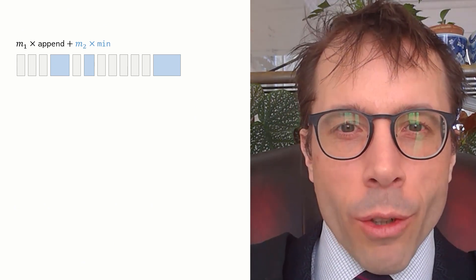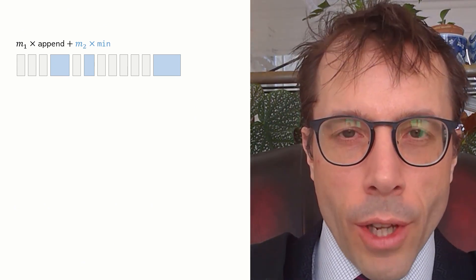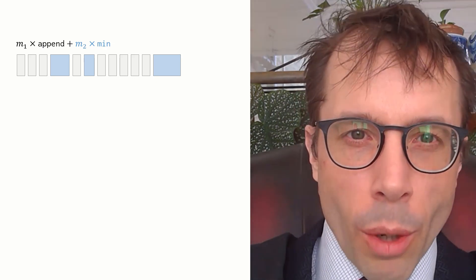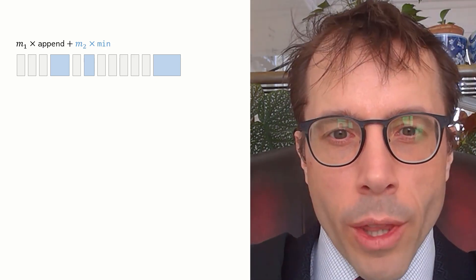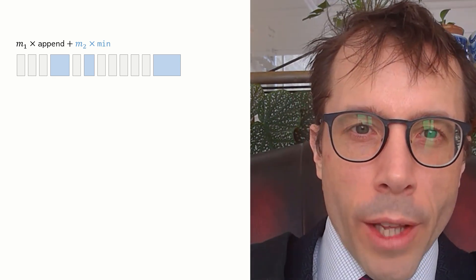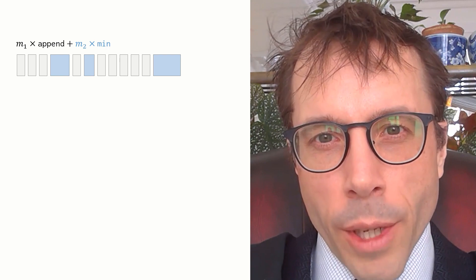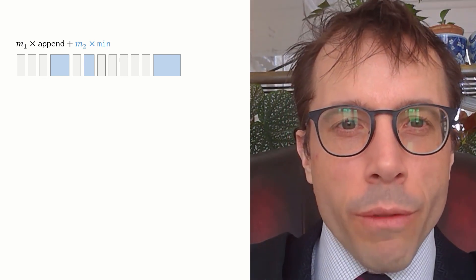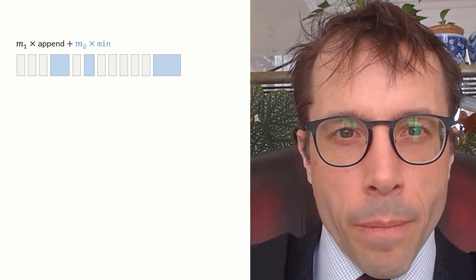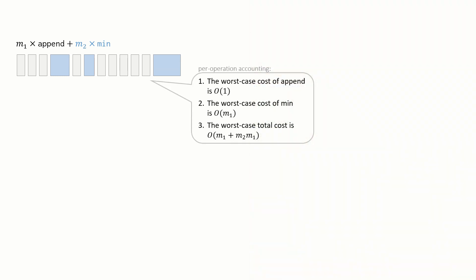Let's have a look at an aggregate analysis of our min list data structure. We'll do the analysis twice—once with simple per operation accounting, once with amortized accounting. Let's imagine that we ran some appends then a min then some more appends then min and so on. Let's say we've done m1 appends in total and m2 calls to min.